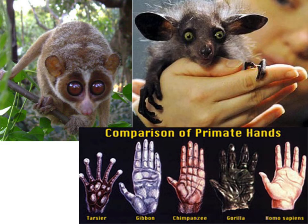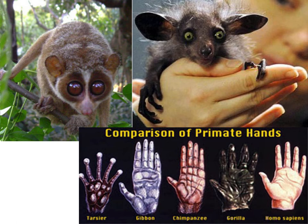Let's take a look at some hands. Homo sapiens is us, then there's a gorilla, chimpanzee, gibbon, and tarsier — and an aye-aye up here. The aye-aye has a middle finger that is really long — an extended thing. They stick it down into an insect hole in a tree, tap on it, then pull it out and grab the grub to eat. Unfortunately, native peoples where it lives think it's the devil because it's creepy looking and kill it, making it endangered.